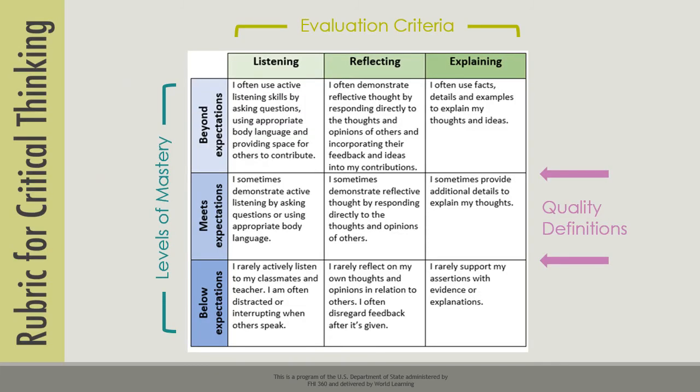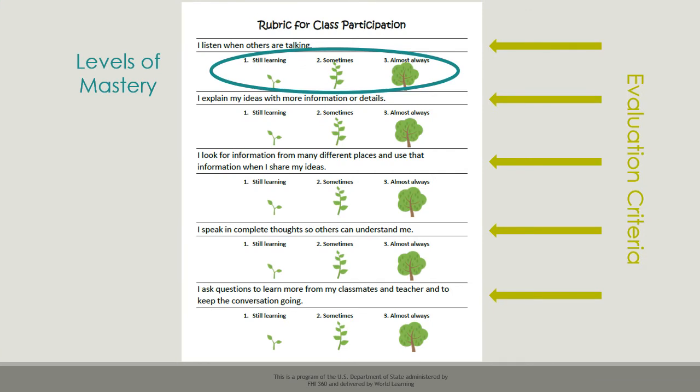Here is a completed and simple example of a rubric for critical thinking. This rubric was designed for young learners. As you can see, the criteria are written in short sentences using simple language. They are also written as 'I' statements, which help the learner think about themselves. This rubric also uses images to show levels of mastery. The images could be smiley faces, stars, or anything that might be relevant to students, as long as it is a symbol they will understand.